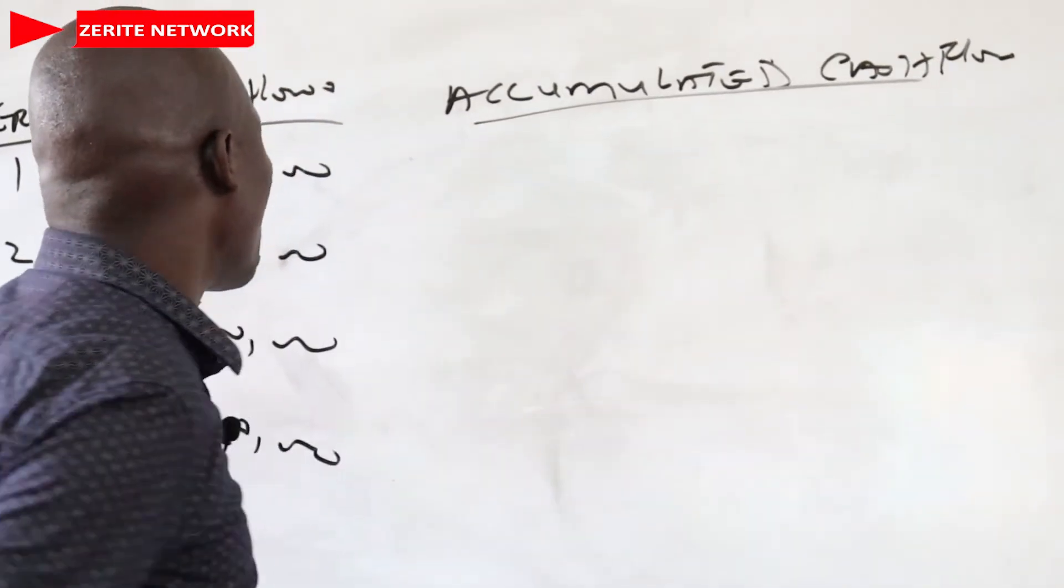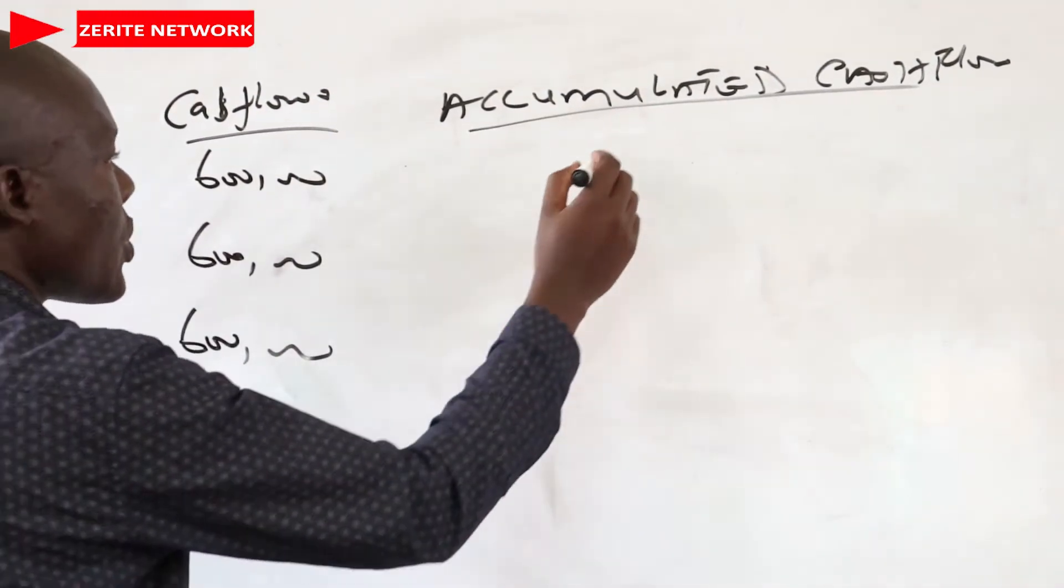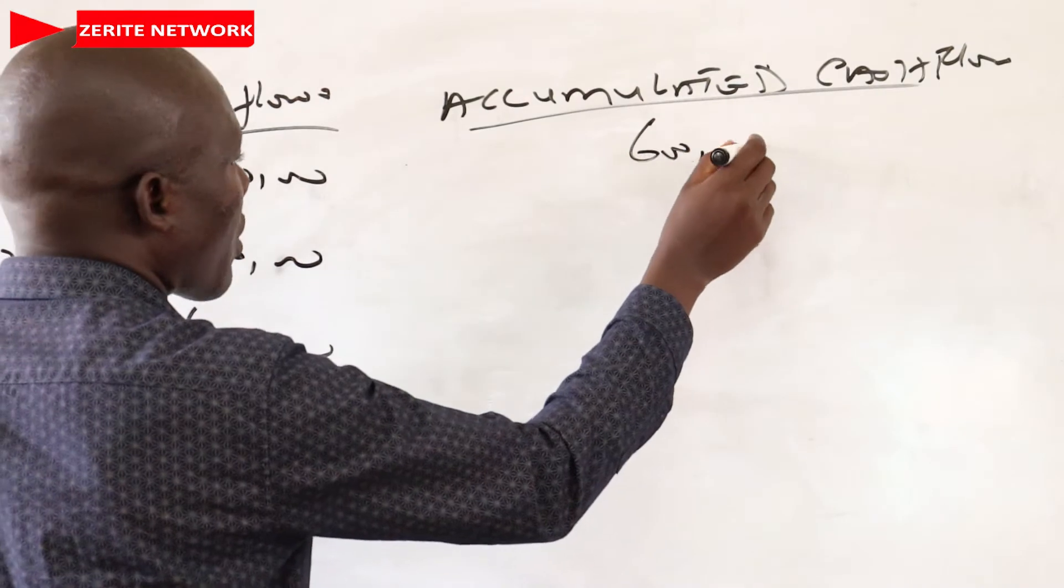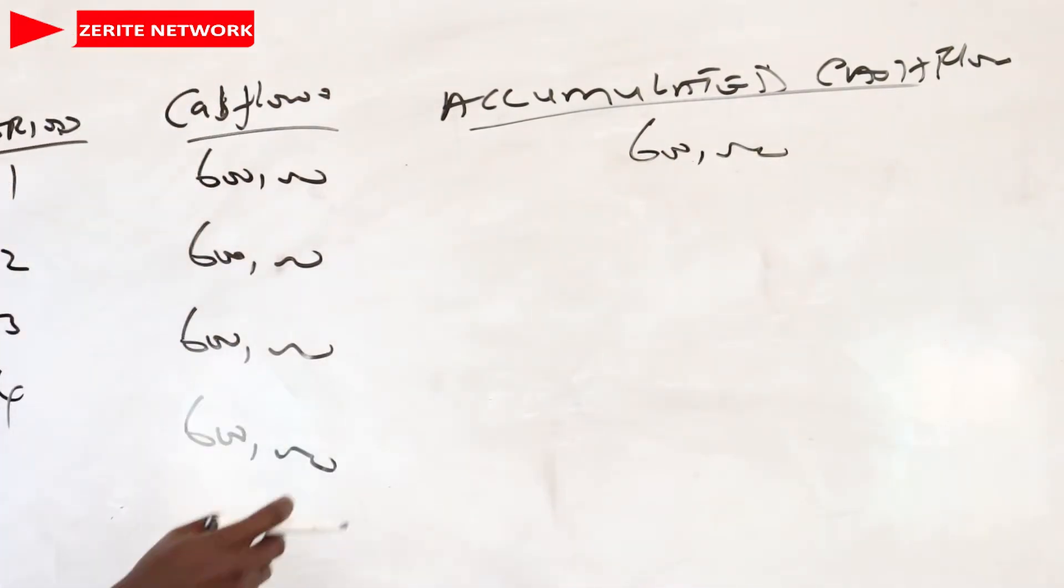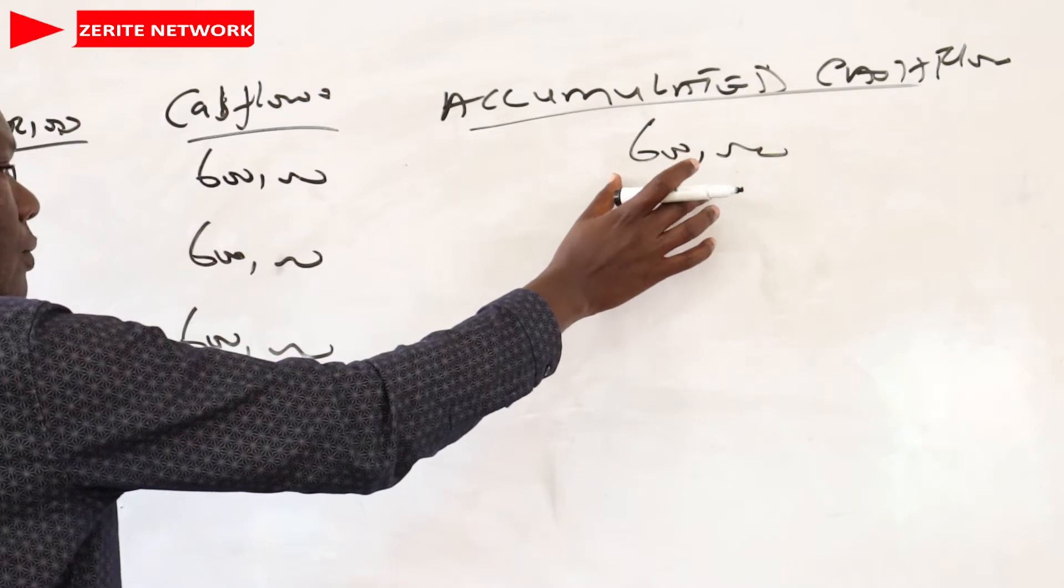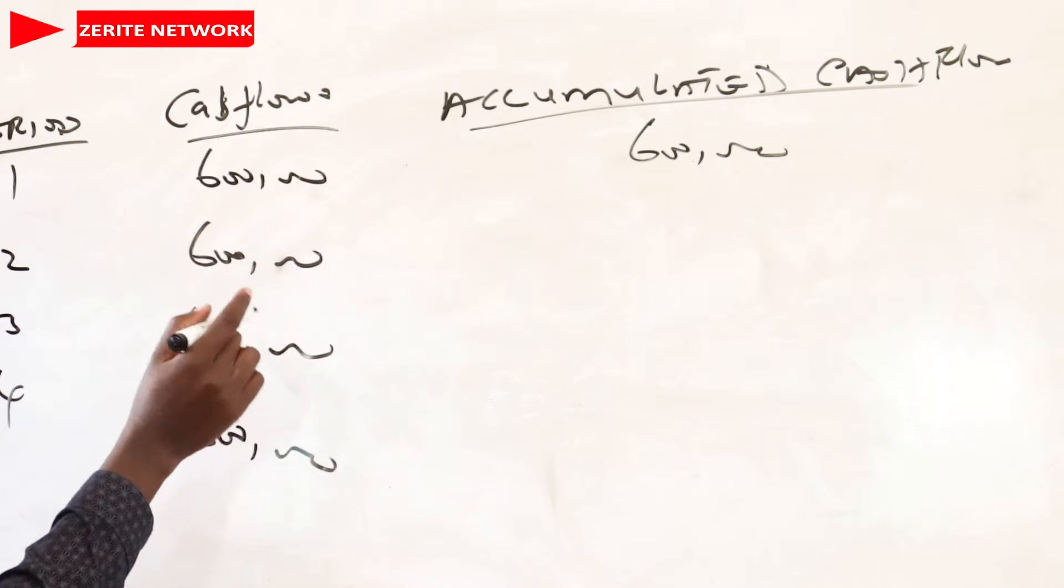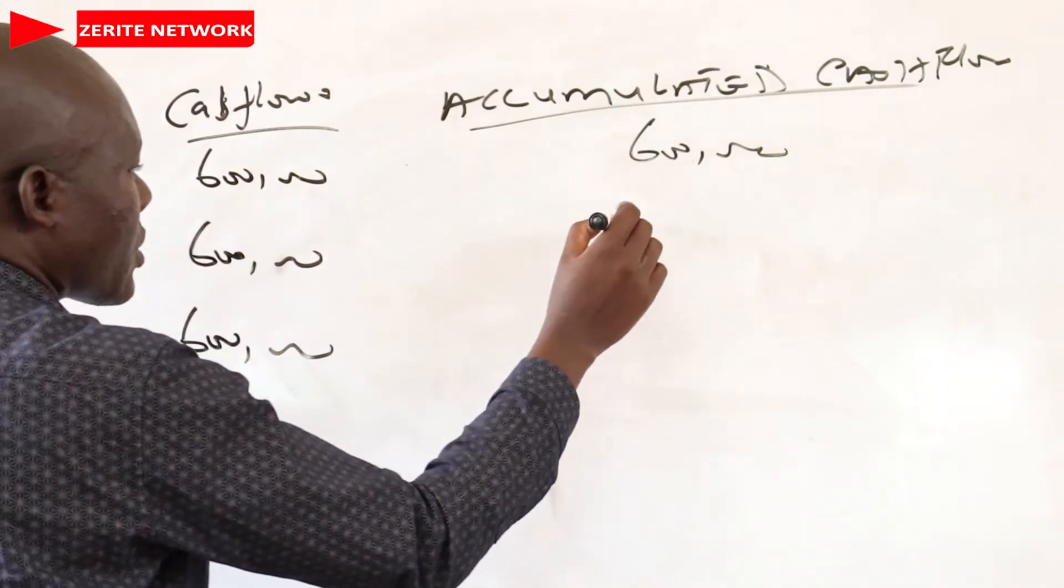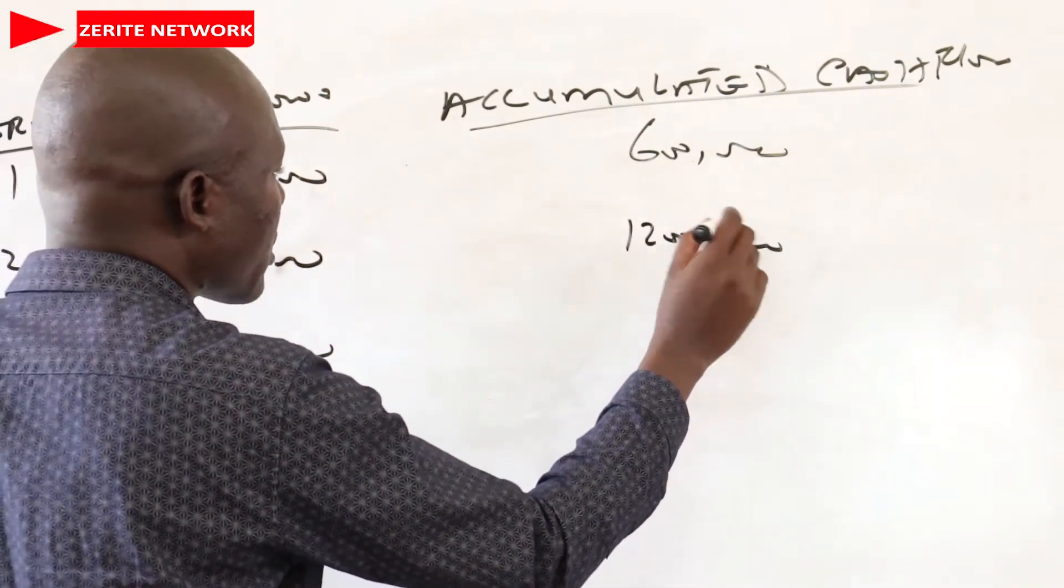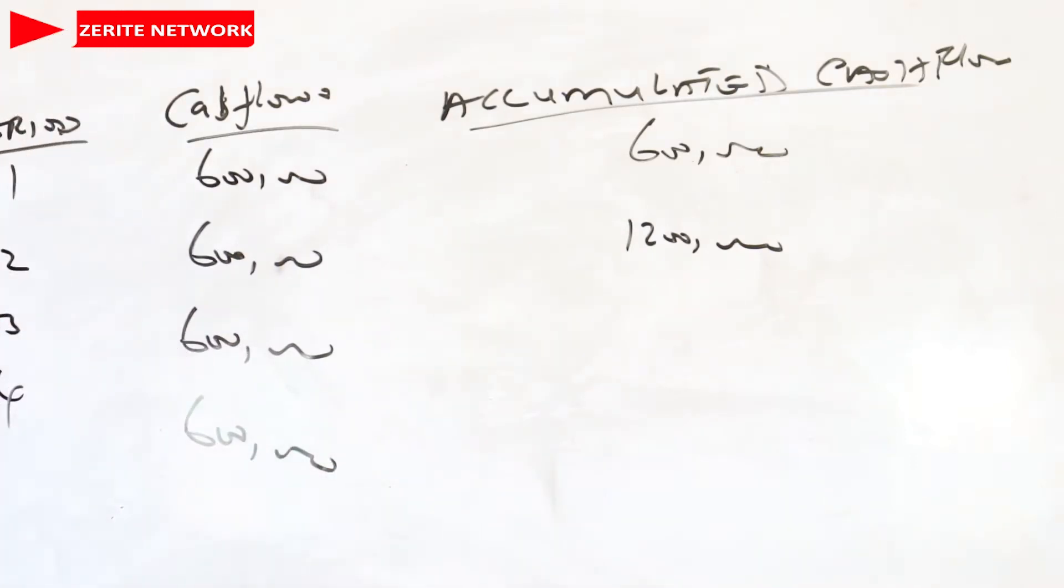So the first period we just take the value the way it is, which is $600,000. When we come to the second period, we will take the accumulated cash flow for the first period and add it with the original value for the second period, which is $600,000 plus $600,000. That is $1,200,000. Now if you are going to period three, if you add the $600,000 plus the $1,200,000, it will be more than the amount we invested, which was $1,500,000. So we have to stop from the second period.